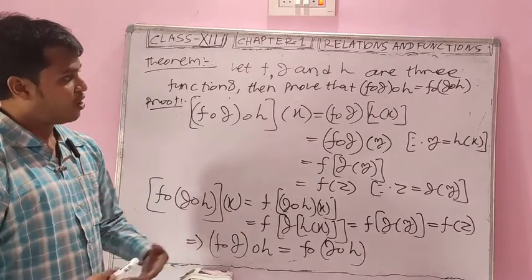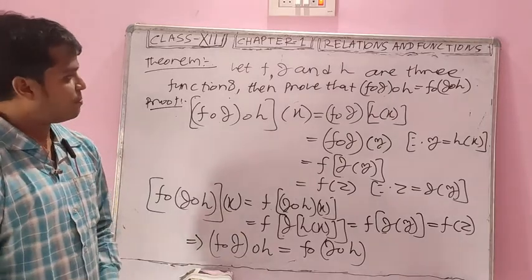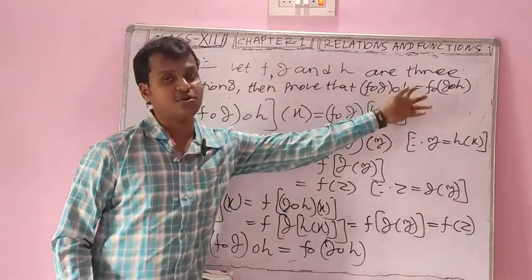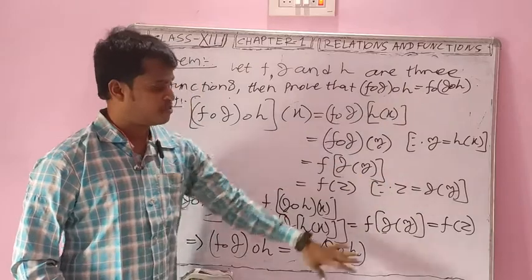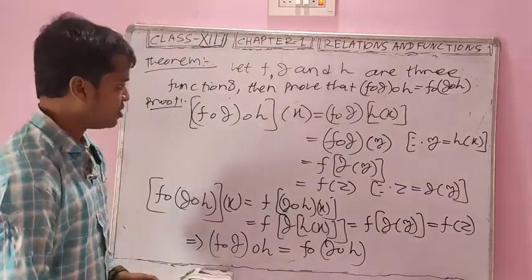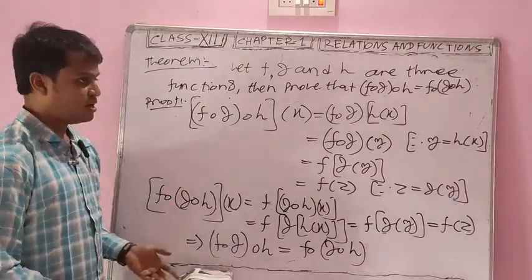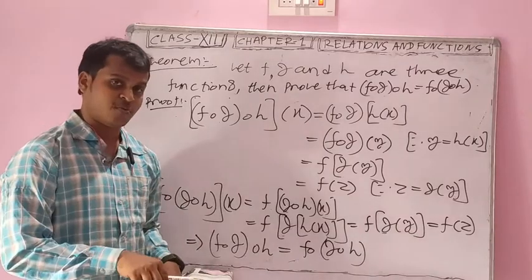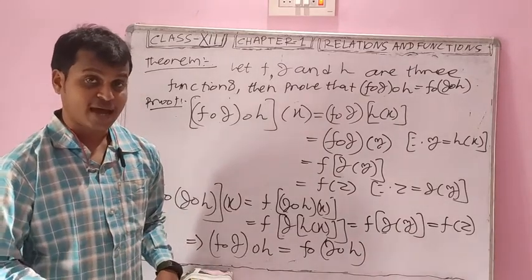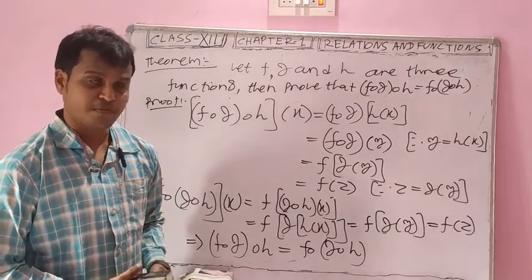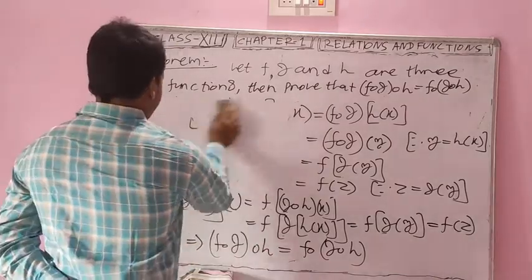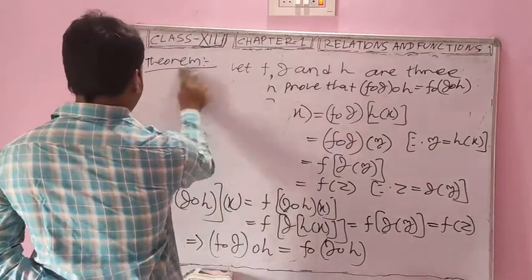This type of question will come: prove that composition of functions satisfies the associative property, or prove that for any three functions (f∘g)∘h = f∘(g∘h). So what we have established: composition does not satisfy the commutative property, but composition satisfies the associative property. Now come to some other proof.